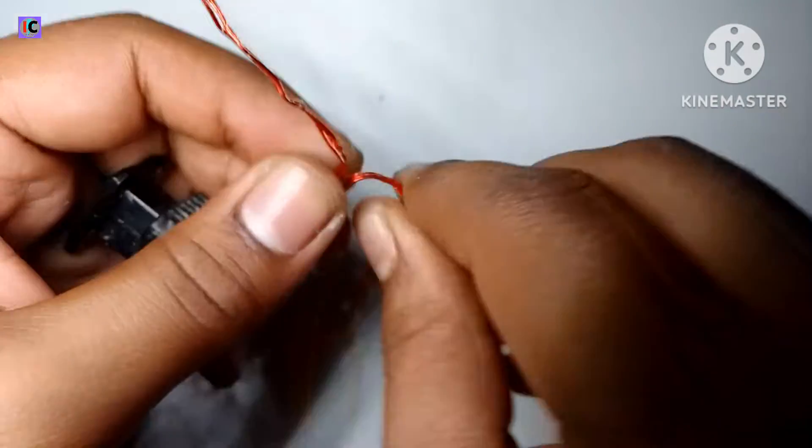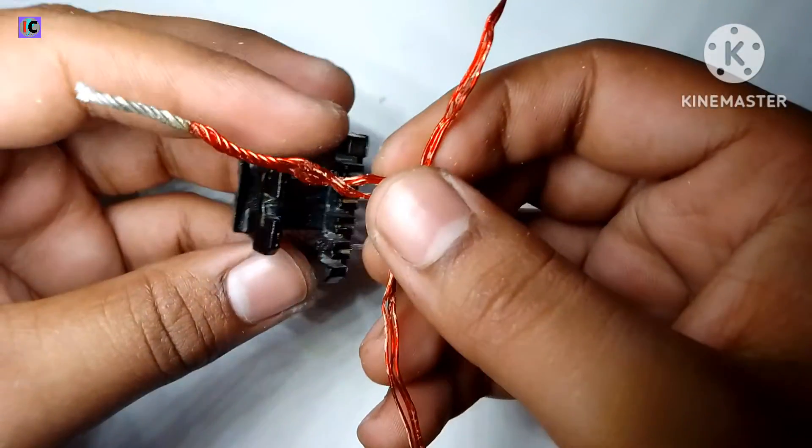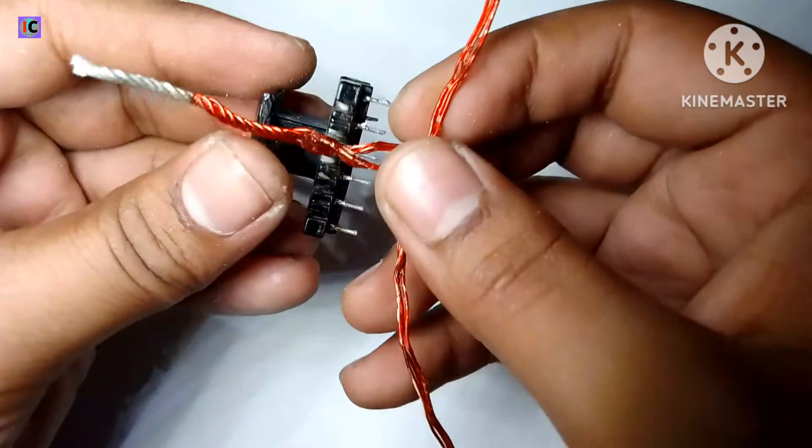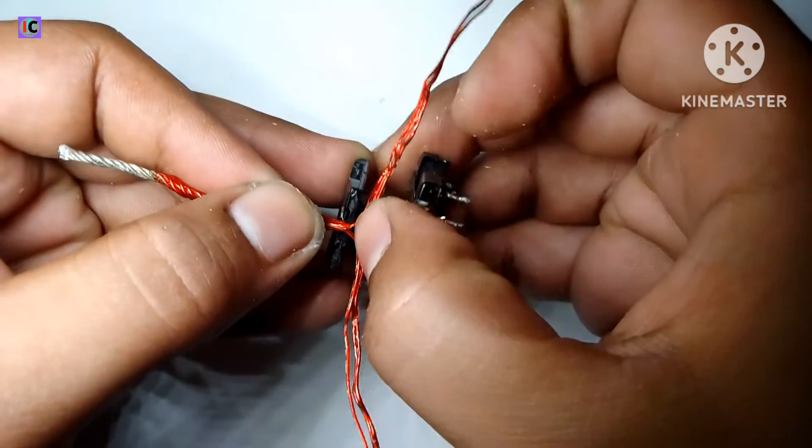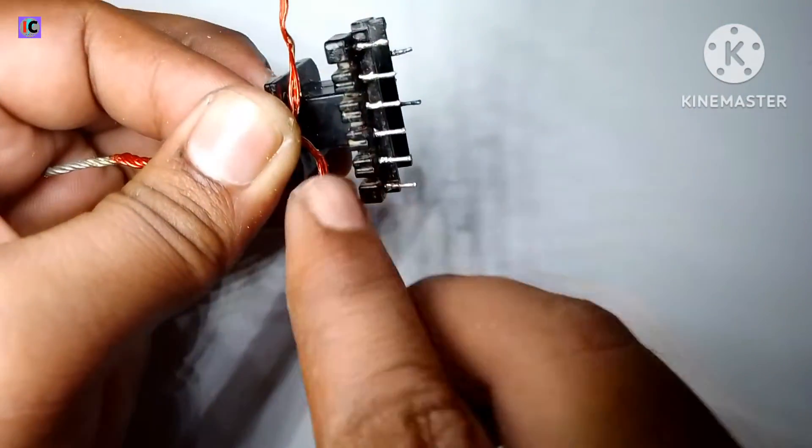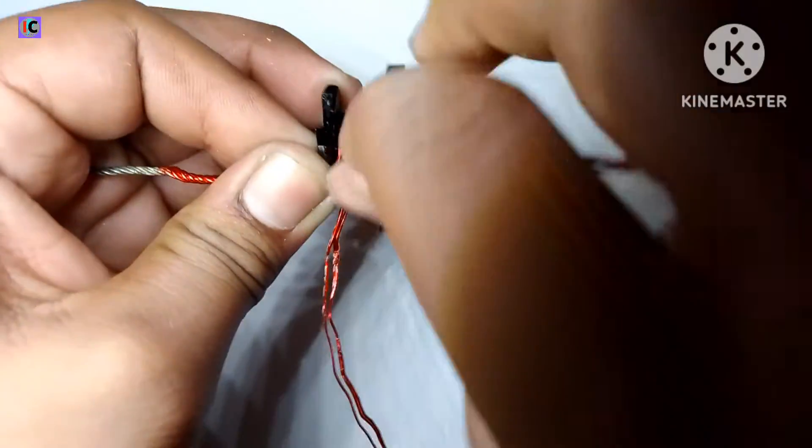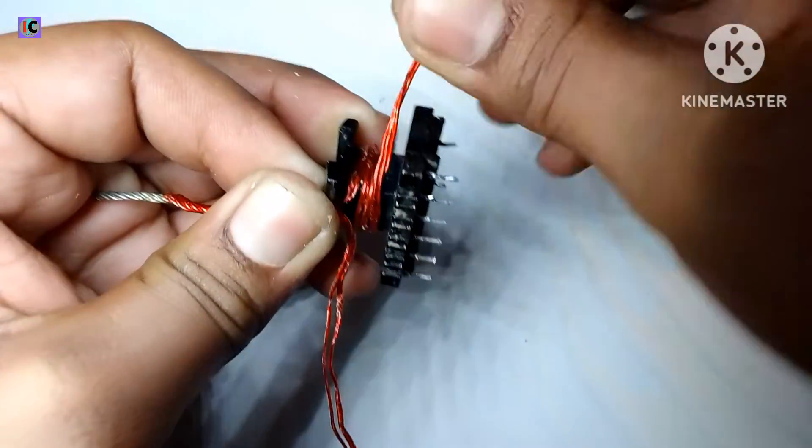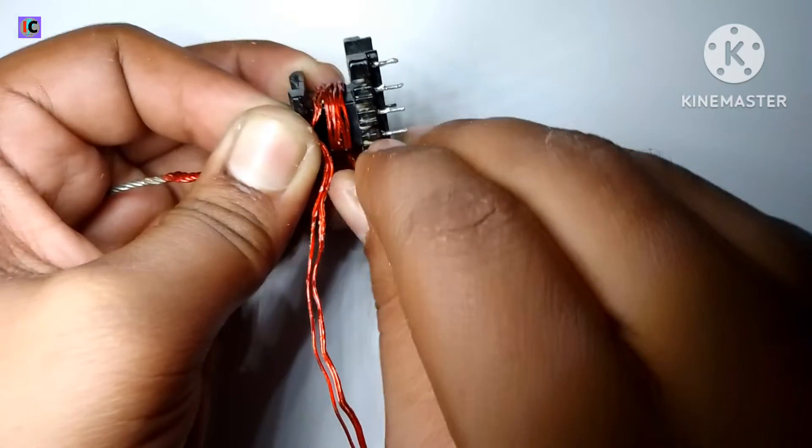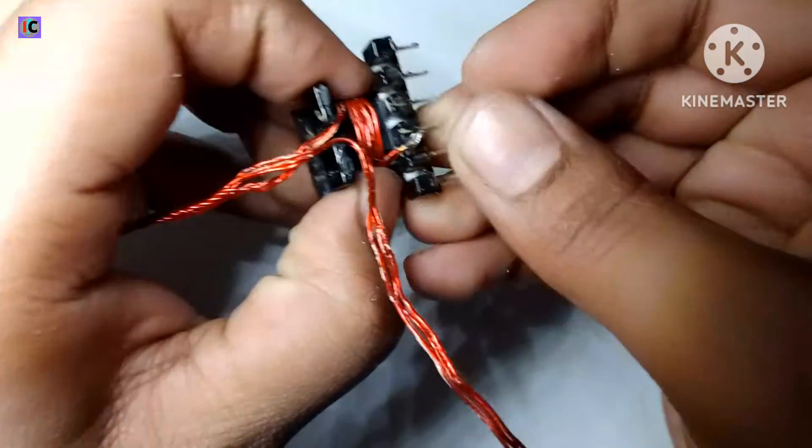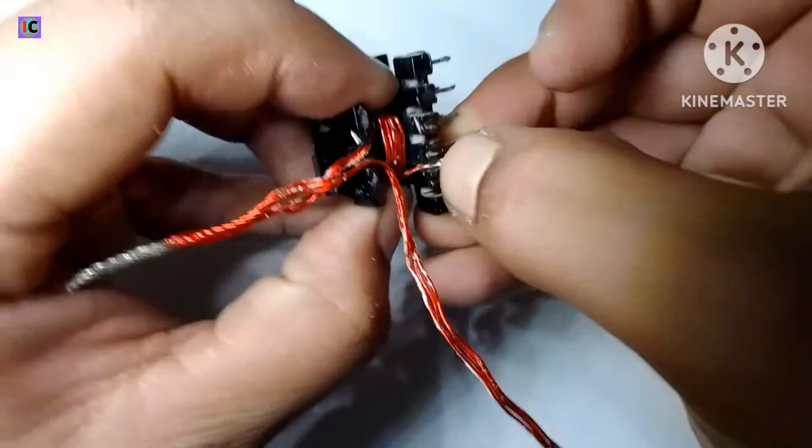This will be the input of this transformer. This is the center tap, and here you can see the three turns. The first turn is complete, the second one, and the third turn is completed. We have to solder the wires on the pins.